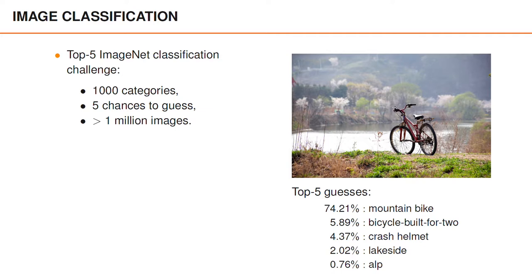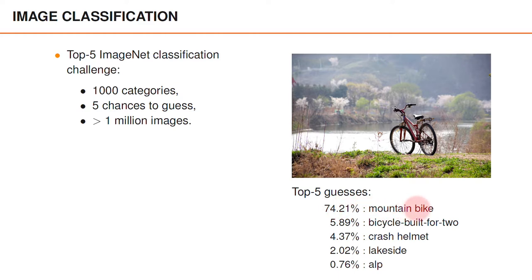The image to the right is not actually from ImageNet, but the object in this image is arguably a mountain bike, which means that our classification network handles this particular image well. When deep learning was applied to this problem in 2012, they managed to improve performance considerably compared to what used to be state-of-the-art performance. Since then, the performance has increased further, and since 2015, it can be argued that these networks do image classification better than humans.